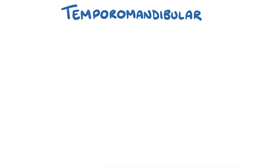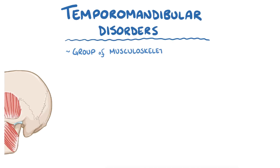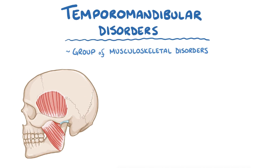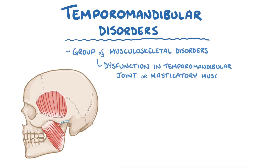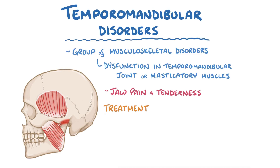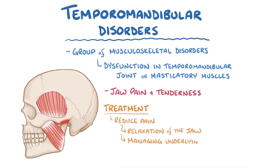As a quick recap, temporomandibular disorders are a group of musculoskeletal disorders that result from dysfunction in the temporomandibular joint or masticatory muscles controlling the jaw. The result is jaw pain and tenderness. A key goal of treatment is to reduce pain, and this can be done with relaxation of the jaw, as well as managing underlying problems like bruxism with oral appliances and the use of pain medications.